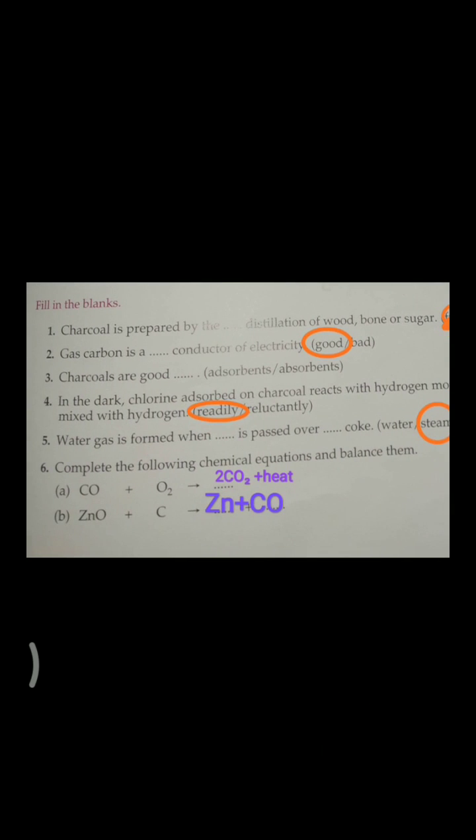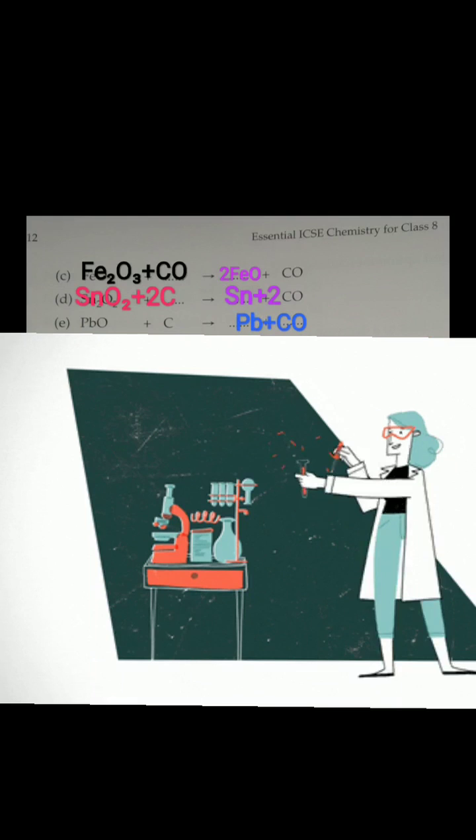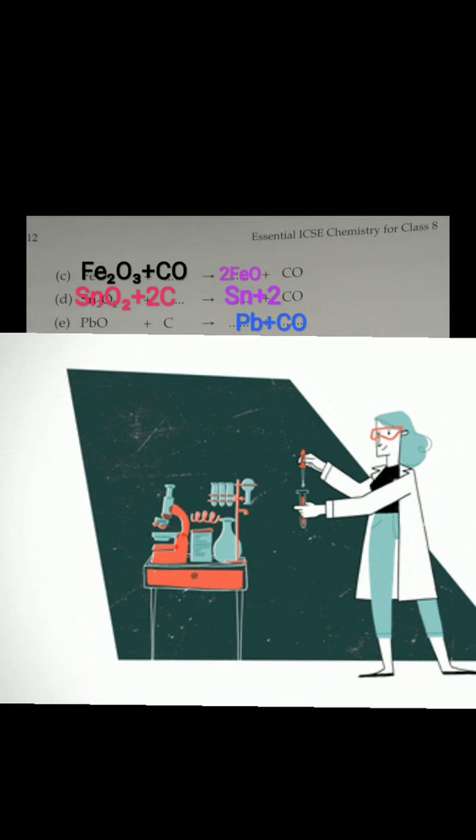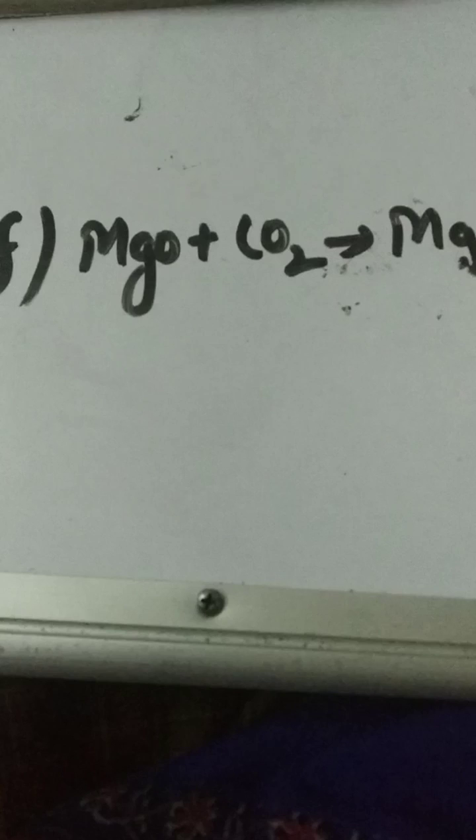Equations. Carbon monoxide when reacts with oxygen, it forms carbon dioxide and heat will release. Zinc oxide when reacts with carbon, it produces zinc and carbon monoxide. Fe2O3 plus CO gives rise to 2FeO plus CO2. SnO2 plus 2 carbon gives rise to Sn plus 2CO. Lead oxide plus carbon gives rise to Pb lead plus carbon monoxide.